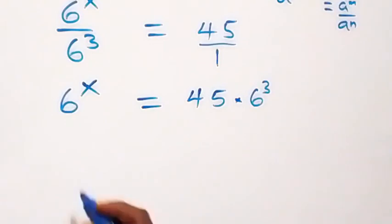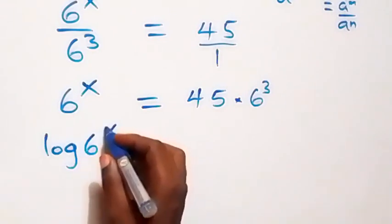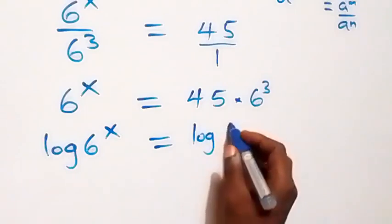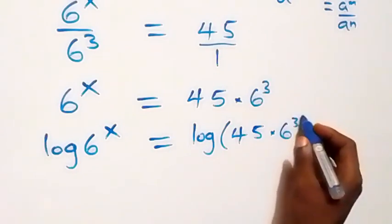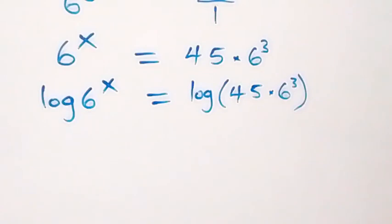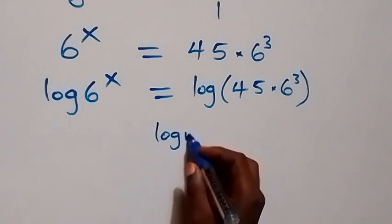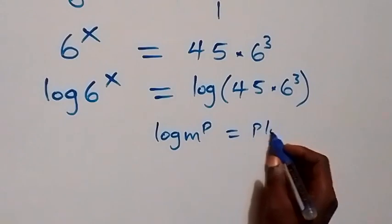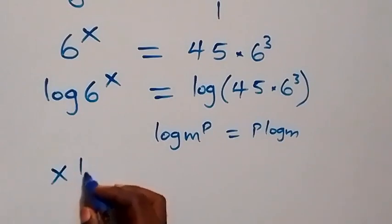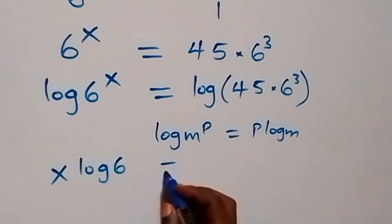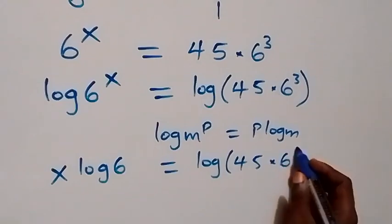Next step from here, we can take the log on both sides. That is, we have log 6 raised to power x equals to log of 45 times 6 raised to power 3. We apply the power rule of logarithm: log m raised to power p equals p log m. Then this becomes x log 6 equals to log of 45 times 6 raised to power 3.